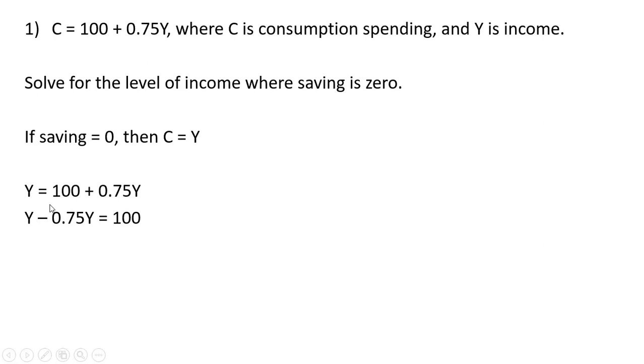Now I'm going to solve this equation for Y. Subtracting 0.75Y from both sides. On the left-hand side, we get 1Y minus 0.75Y or 0.25Y. Then dividing through by 0.25.